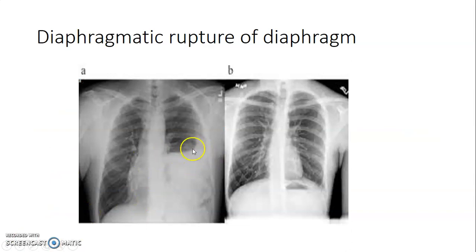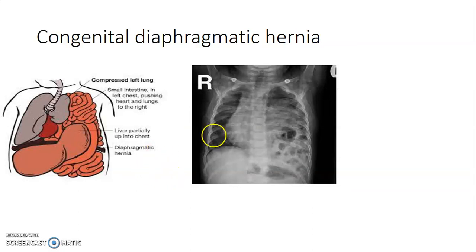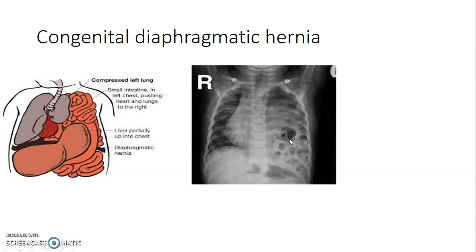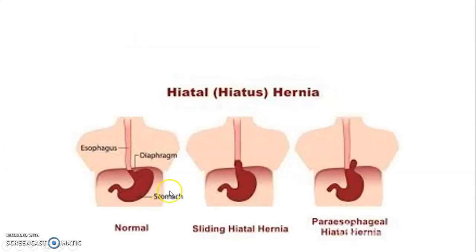This image shows rupture of the diaphragm on one side — you can see the shadow where the normally dark lung fields are replaced by abdominal contents that have entered the left thoracic cavity. Another image shows congenital diaphragmatic hernia, where the diaphragm did not develop properly and abdominal contents herniate into the thoracic cavity, visible as air bubbles from bowel within the left side. A diagram then illustrates the different types of hernia: normal anatomy, sliding hernia (cardia shifted up), and paraesophageal hernia (herniating parallel to the esophagus).